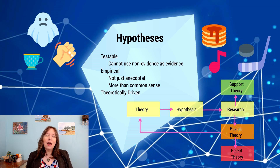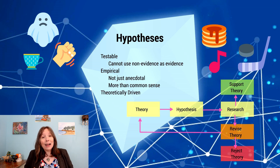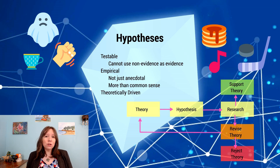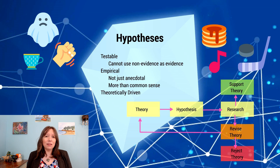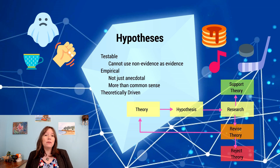Another key requirement of a research hypothesis is that it must be empirical. You can't use anecdotal evidence — you can't just say 'this one time I studied and did well, another time I studied and didn't, so studying doesn't matter.' Anecdotal means personal life stories. While personal stories are a valuable way of knowing, for hypothesis testing and scientific models they are not sufficient. We need more than anecdotal evidence and more than common sense.